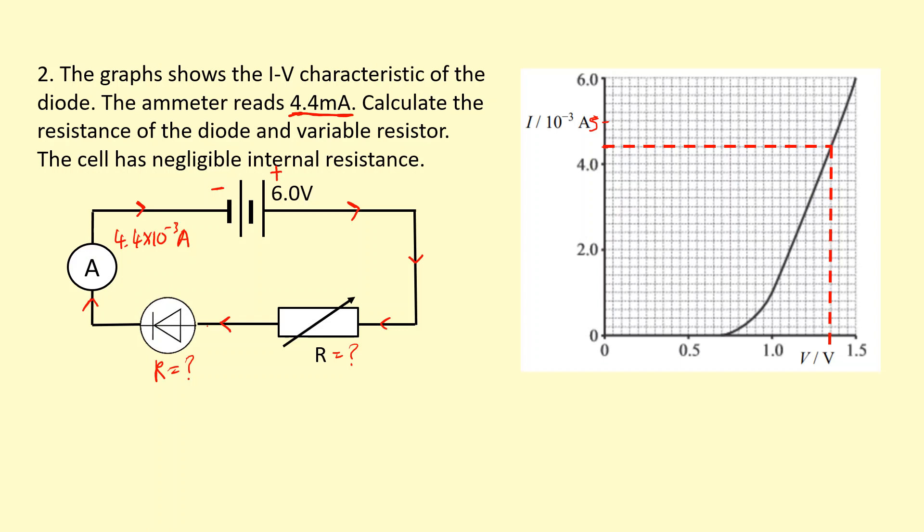And again, be careful because now these 10 small squares are going to be worth 0.5 volts. That means 1 square will be worth 0.05 volts. And I have 1, 2, 3, 4, 5, 6, 7 squares there. So it's going to be 7 times 0.05, which is 0.35 volts. And add that on to the 1 that's already there. So that means the voltage across here, it's going to be 1.35 volts.